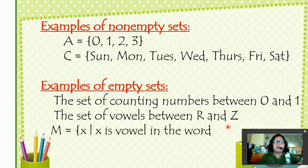Next, set M is a set of X such that X is a vowel in the word rhythm. You have your letters of R, H, Y, T, H, M. Those are consonants. So that is why set M is an empty set.